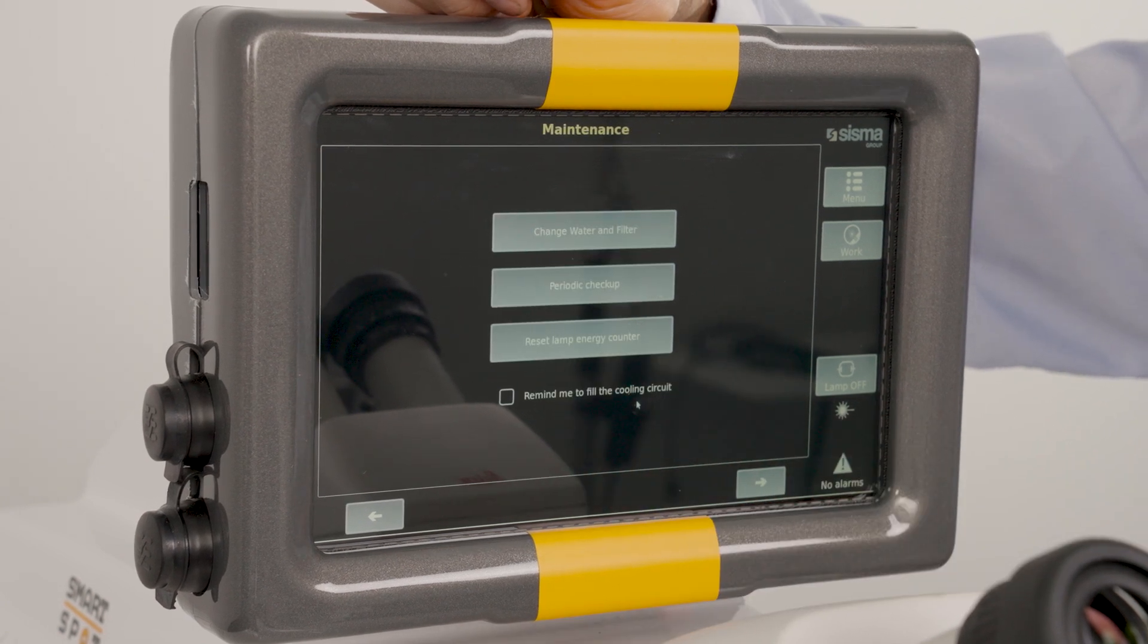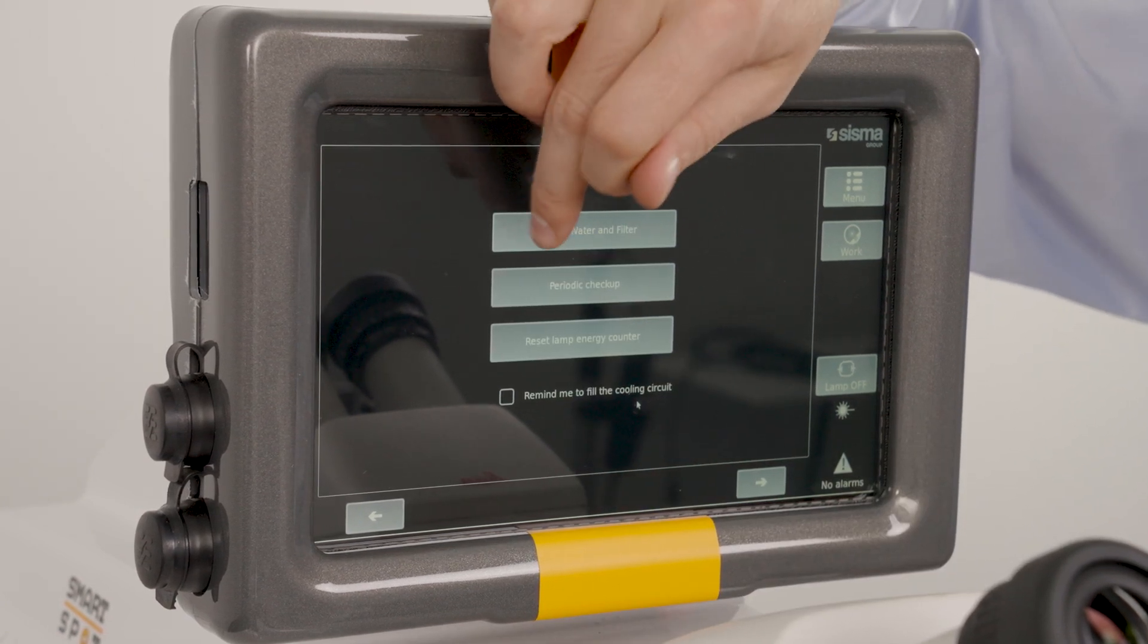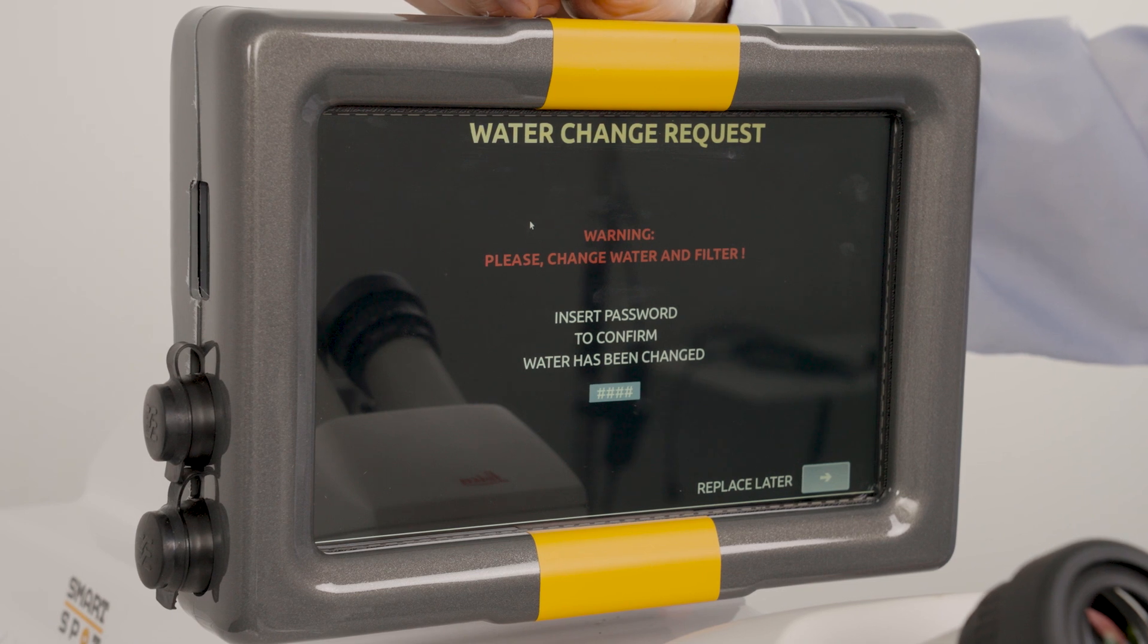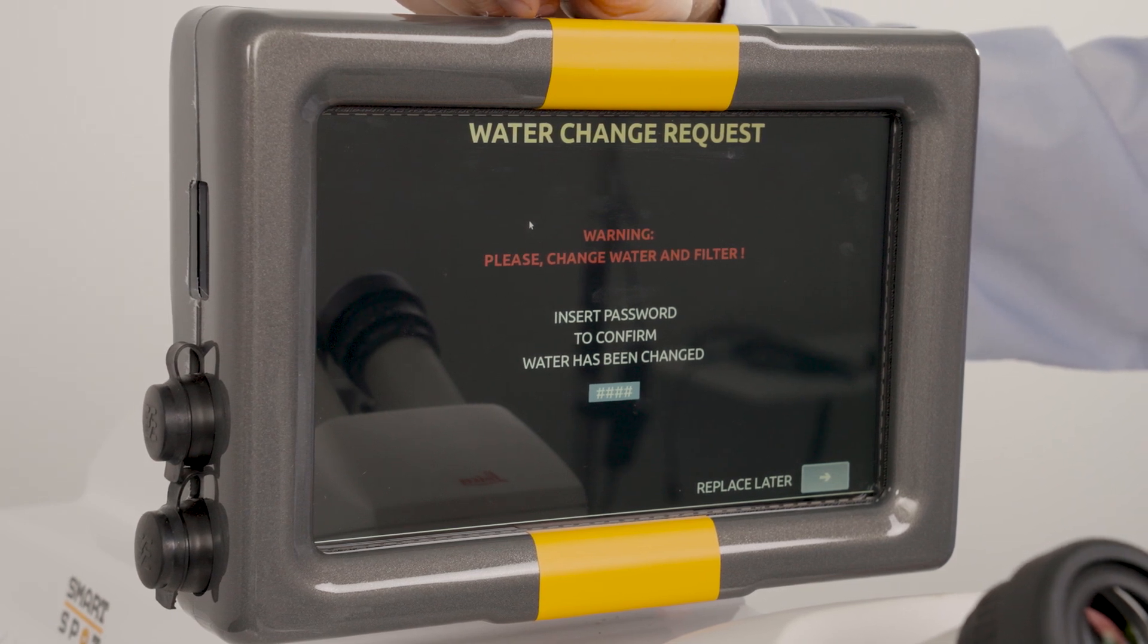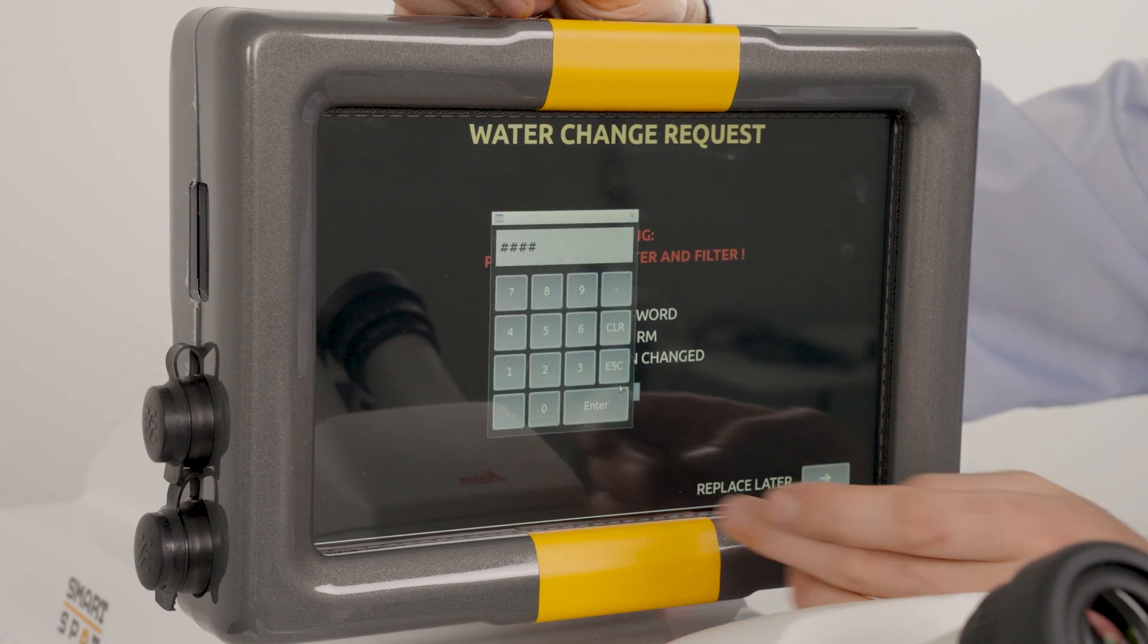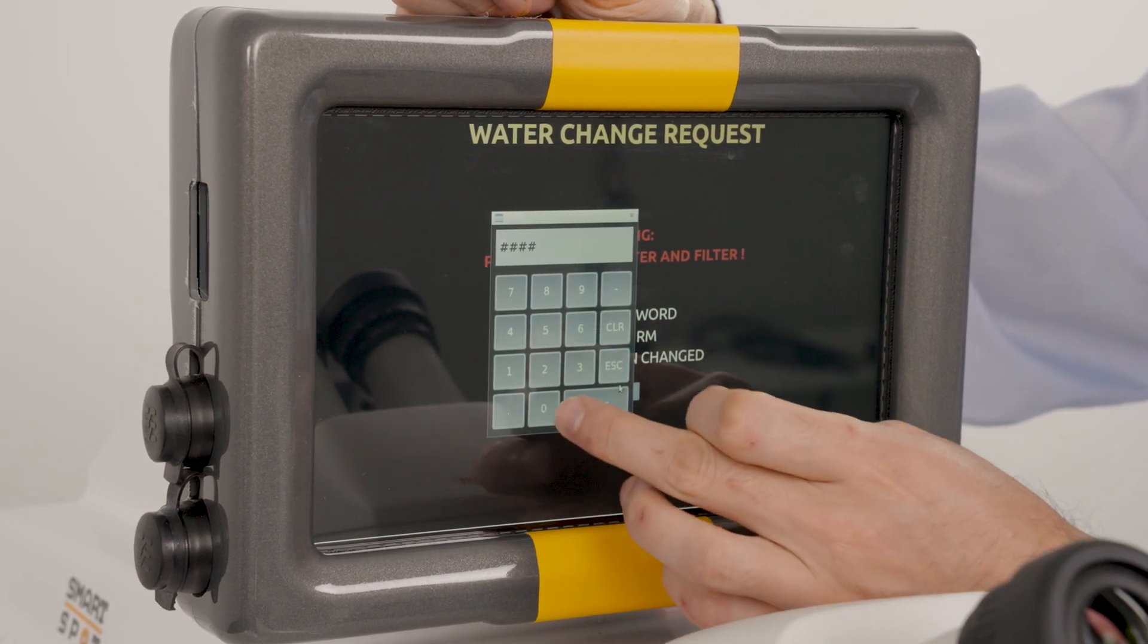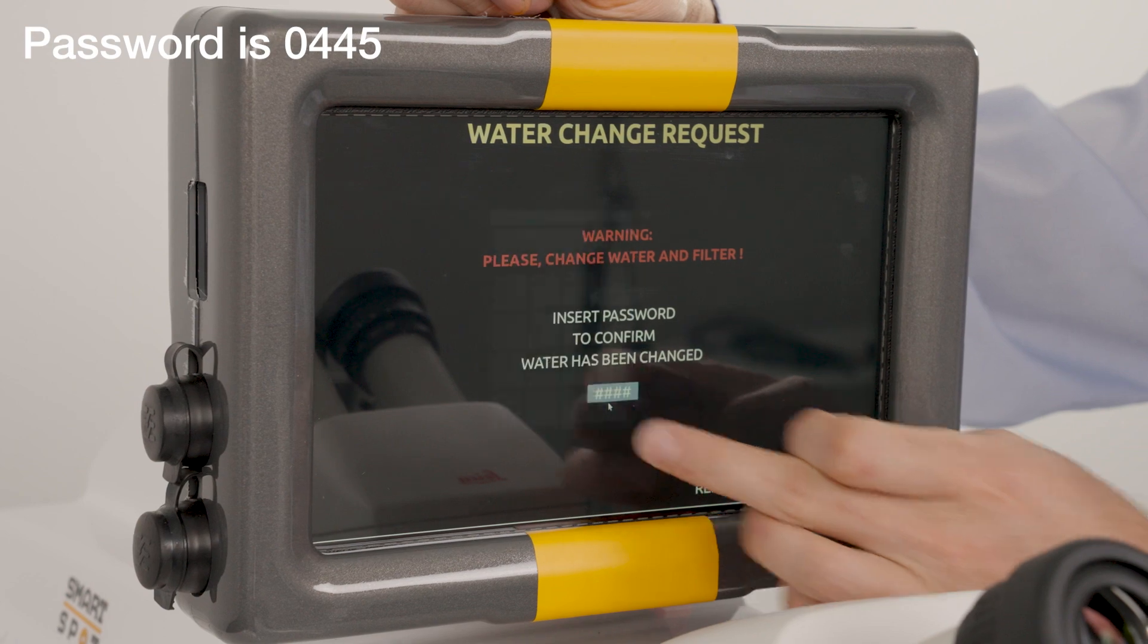So let's touch maintenance, change water and filter, and this screen tells us that we need a password to confirm that the water has been changed. Let's touch here and enter the password 0445. Enter.